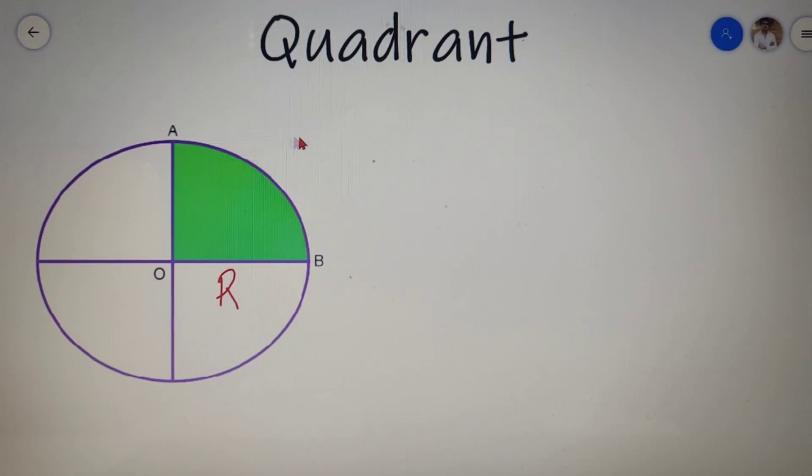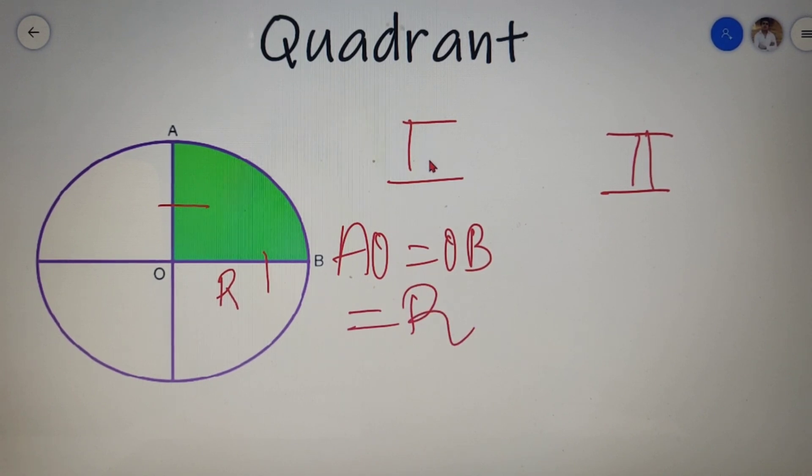For finding the perimeter of a quadrant, let's divide it into two parts, 1 and 2. The first part will be the two bases of the quadrant, that is AO and OB. Now AO is equal to OB, which is equal to R. So the first part is equal to 2R.